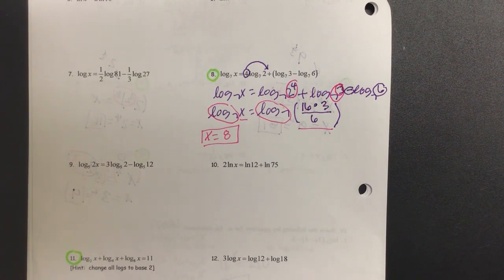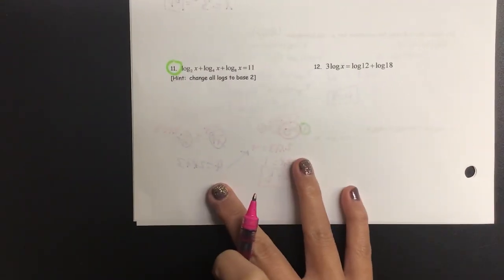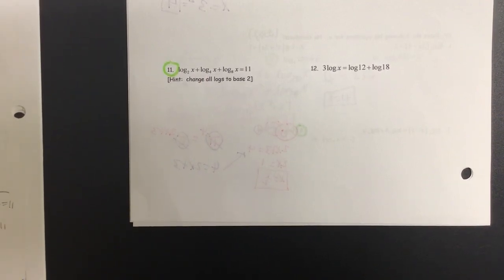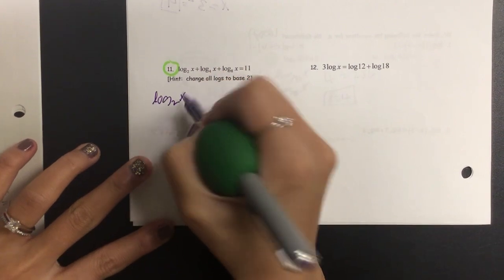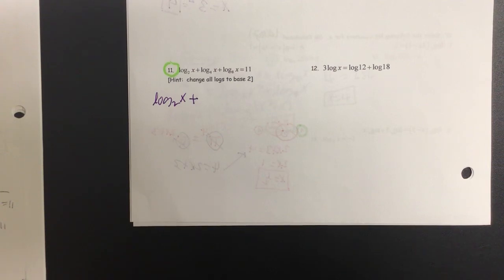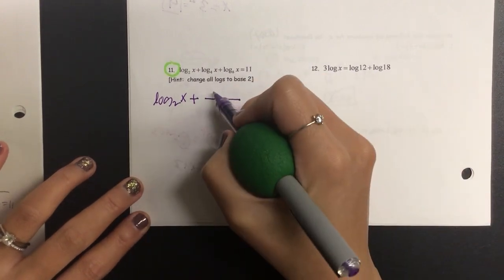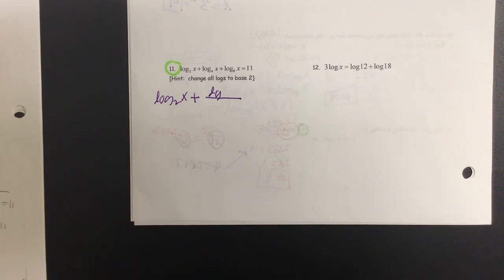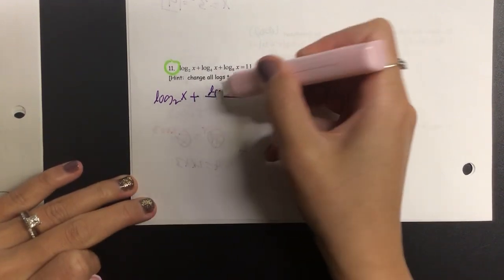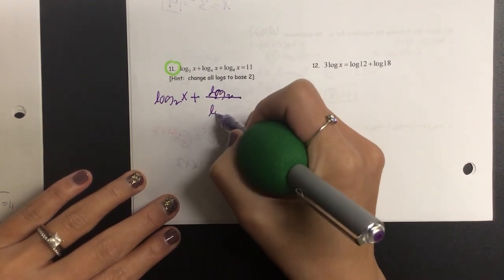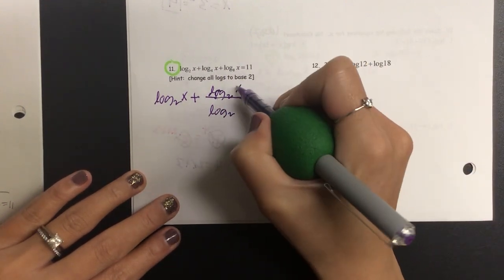Is it slowly coming back to you from algebra 2 and maybe pre-cal? All right number 11. Number 11 gave you a hint on the bottom, what does it say? Make it all into base 2. So the first one is already in base 2, so I'm not going to mess with that. Let's do a recall of change of base. If I had 4 and an x and it's not a base 2, I need to go ahead and separate it. That's not log, look what I wrote, lg.